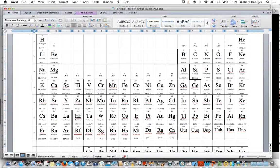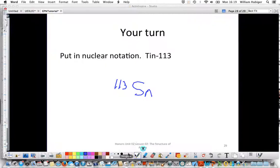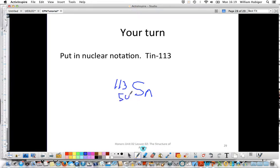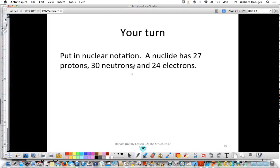And we have to go to the periodic table to find its atomic number. So we find tin right there. It has an atomic number of 50. So we put a 50 as a subscript. And there's tin-113.